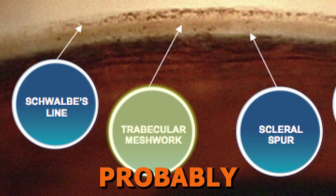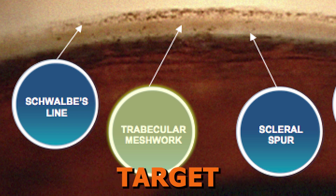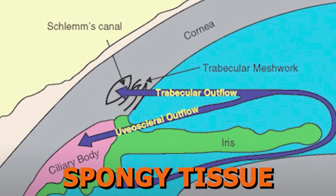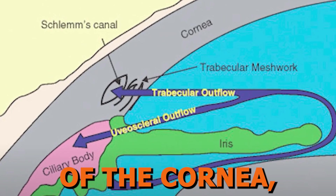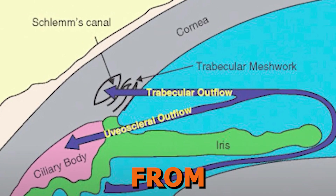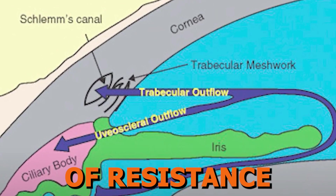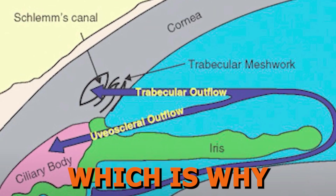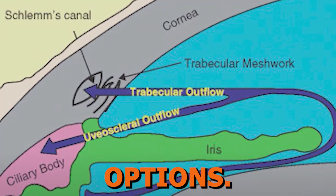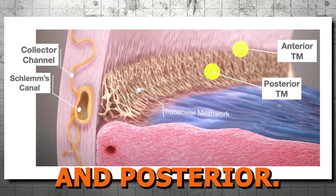The trabecular meshwork is probably the most important structure to be able to identify, because it is typically the target structure engaged in MIGS. It is a spongy tissue located around the base of the cornea responsible for draining aqueous humor from the eye into Schlemm's canal, and it's considered a primary site of resistance in the outflow pathway, which is why it is often targeted in MIGS treatment options. There are two visible areas of the trabecular meshwork: anterior and posterior.